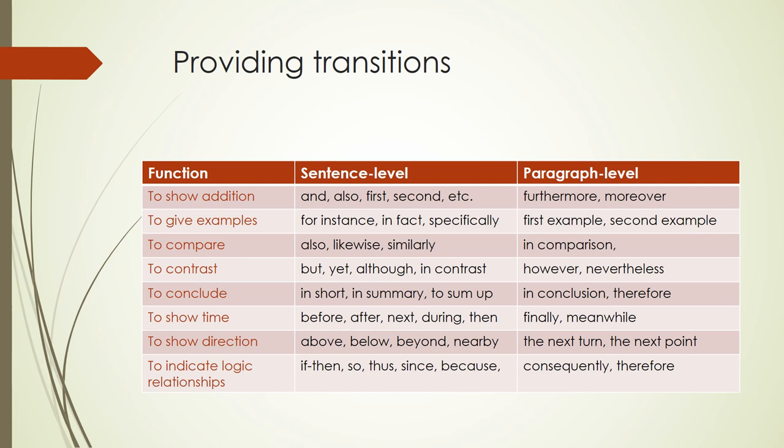Paragraph-level transitions tend to be longer, heavier, more consequential words, and usually link the first sentence of a new paragraph with the first sentence of the previous paragraph. In other words, these heavier transitions work at the level of topic sentences, logic, and ideas to signal global connections and coherence in the development of an argument.